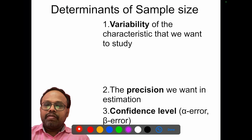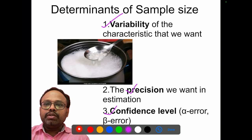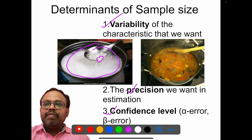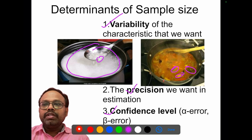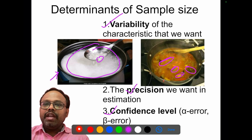Here are the determinants of the sample size — what makes sample size higher or lower. It is decided by three parameters: variability, precision, and confidence level. For example, when cooking rice, a sample from the bowl will represent the entire bowl. But if you are dealing with a different cuisine with different vegetables, you need to sample each one to ensure it is cooked properly. The number you are testing is higher in the second case because the variability is more. As variability increases, the sample size also increases.